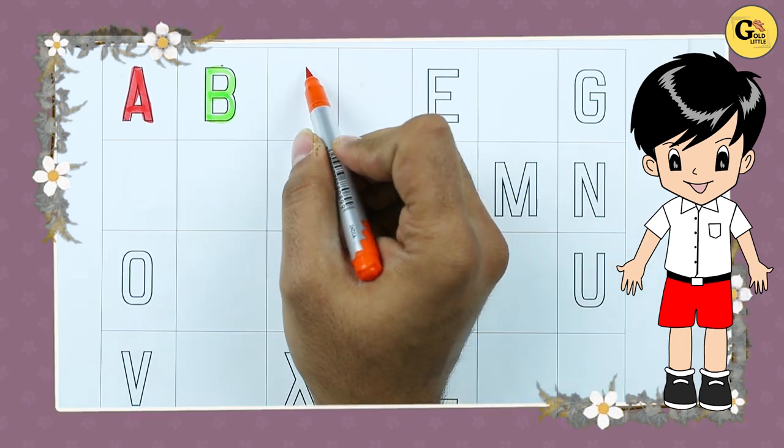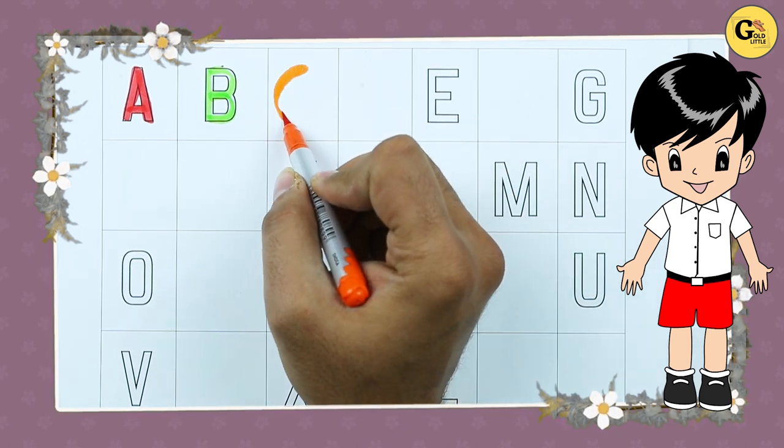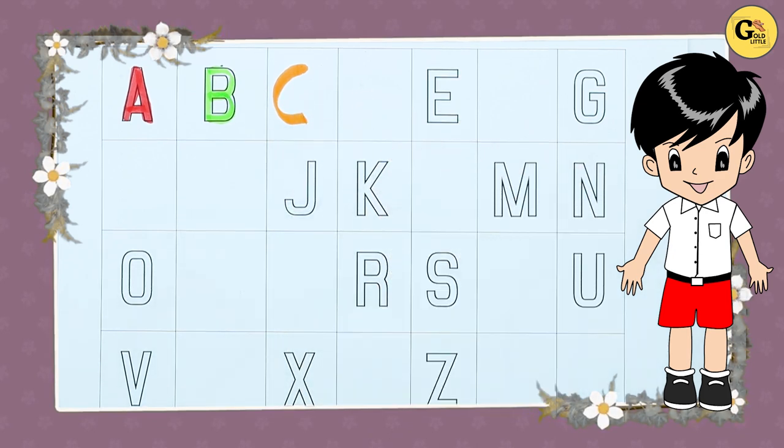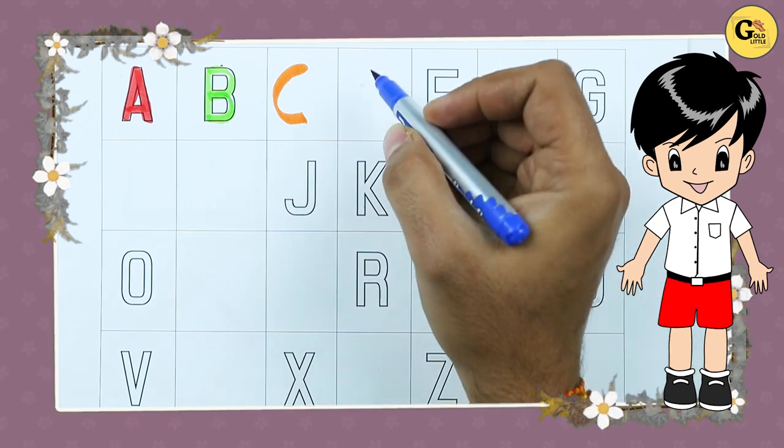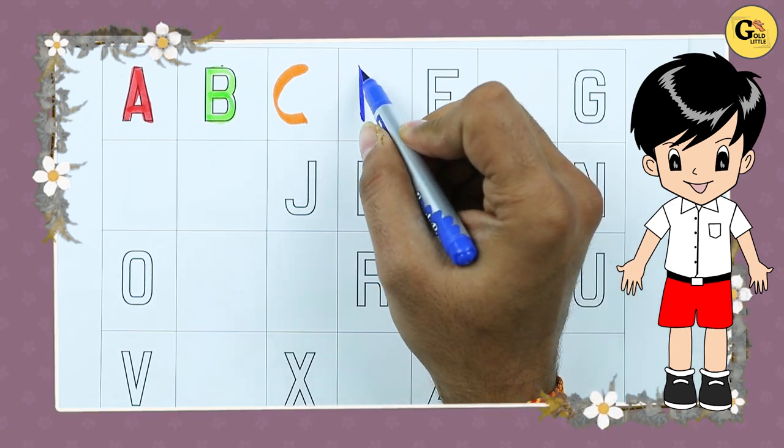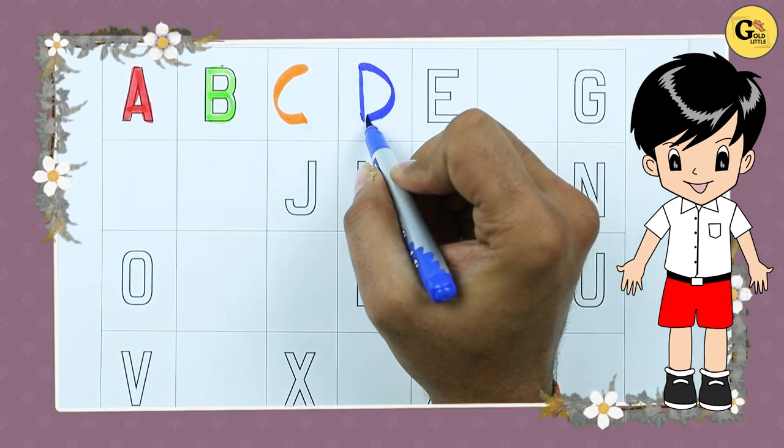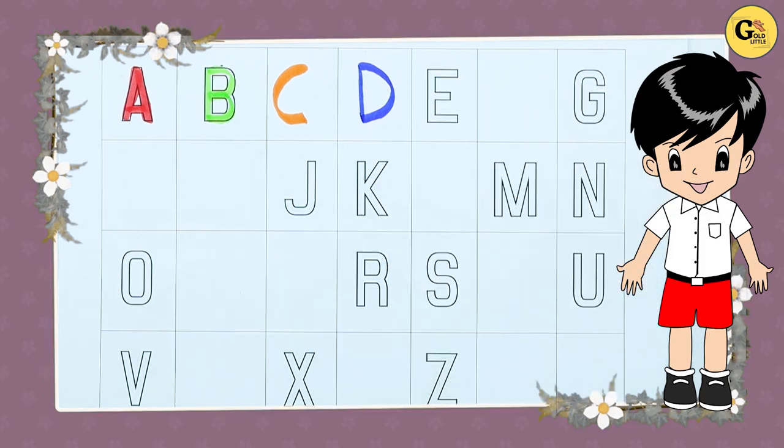C. What's next? C. C with orange color. C for cat. What next? Tell me, tell me. Yes, right. D. D for dog with blue color.